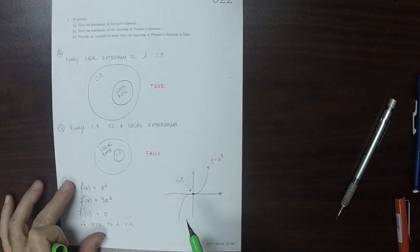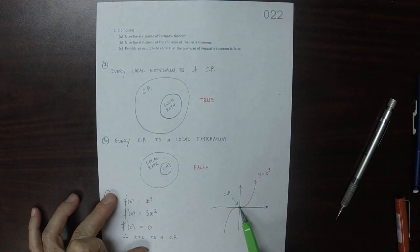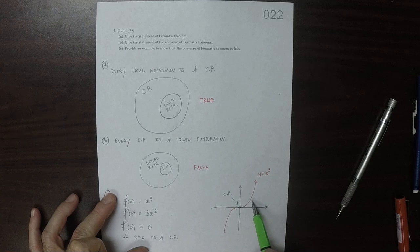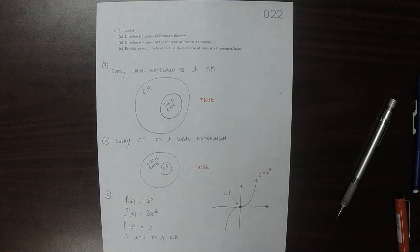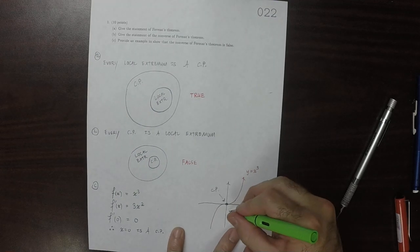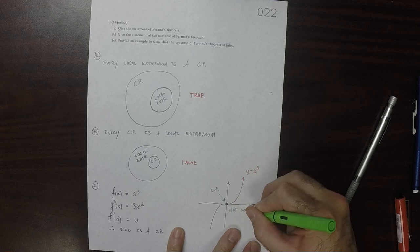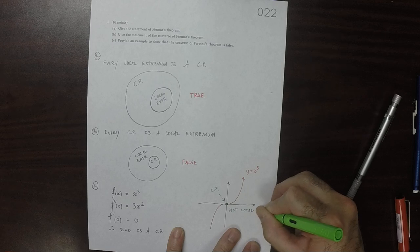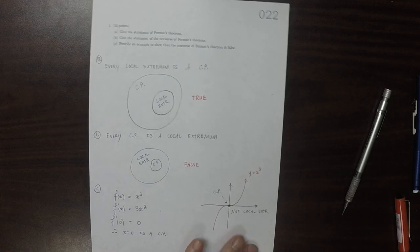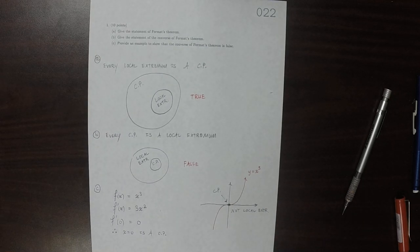However, you can see clearly that that is not maximal because these points over here are higher, and it's not minimal because those points over there are lower. So this is a critical point that is not a local extremum. Therefore the converse of Fermat's theorem is false.